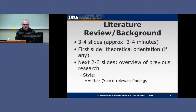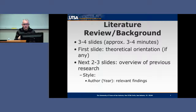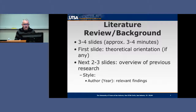First comes the literature review and background — about three to four slides, no more than four minutes. Your first slide should be a theoretical orientation if you have one. The next two to three slides are an overview of previous research in your area. When referencing previous research, format it as author, year, and then the relevant findings. So the author of the publication you're reviewing, the year it was published, followed by the relevant findings.